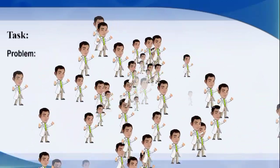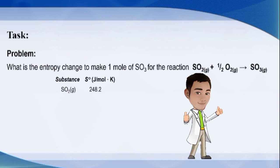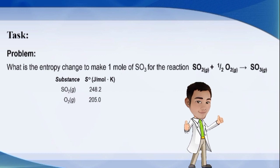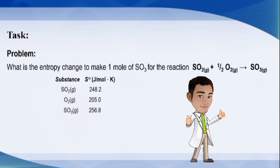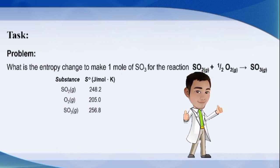Now it's time to challenge yourselves by answering this problem: what is the entropy change to make 1 mole of sulfur trioxide? For the reaction: sulfur dioxide gas plus one-half oxygen gas yields sulfur trioxide gas. The standard absolute entropy of sulfur dioxide is 248.2 J/mol·K, for oxygen it is 205.0 J/mol·K, and for sulfur trioxide it is 256.8 J/mol·K.